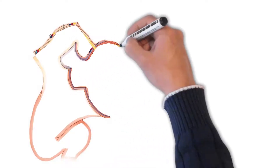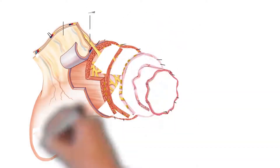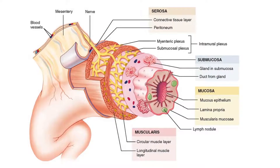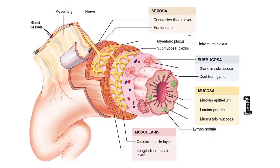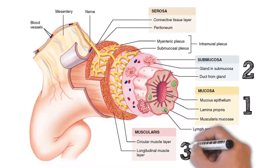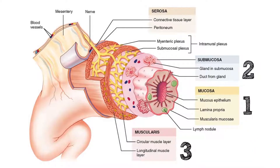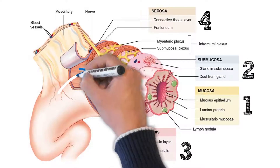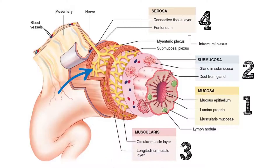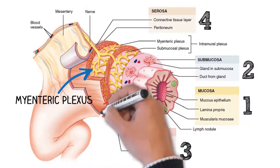Now let's have a quick glance at the histology of the gut. Any region of the gut is formed of four layers of tissues. The first and innermost layer is the mucosa. The second layer, outer to it, is the submucosa. Third comes the muscular layer, and finally the outermost layer is the serosa. The muscular layer is formed of outer longitudinal muscles and inner circular muscles. In between these muscle layers exists a network of nerves, namely the myenteric plexus. In between the muscular layer and submucosal layer, another nerve network exists — the submucosal plexus.